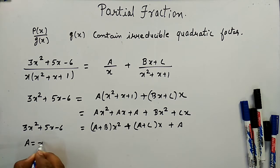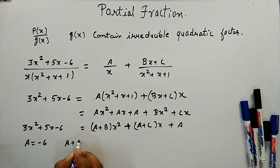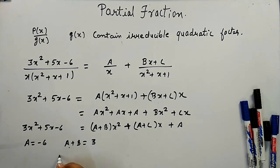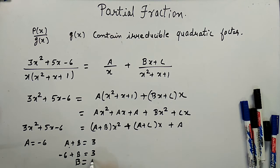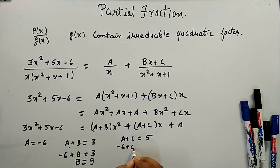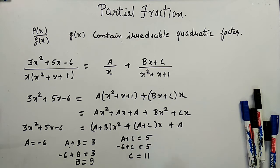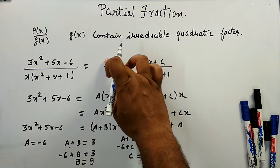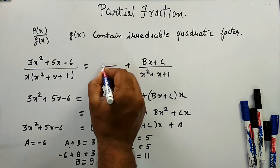Comparing coefficients, A = -6. From the x² coefficient, A + B = 3, so B = 9. From the x coefficient, A + C = 5, so putting A = -6 we get C = 11.